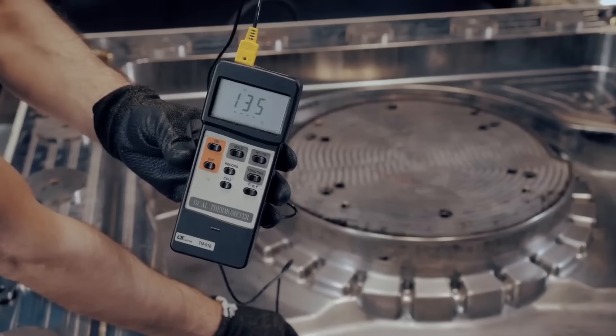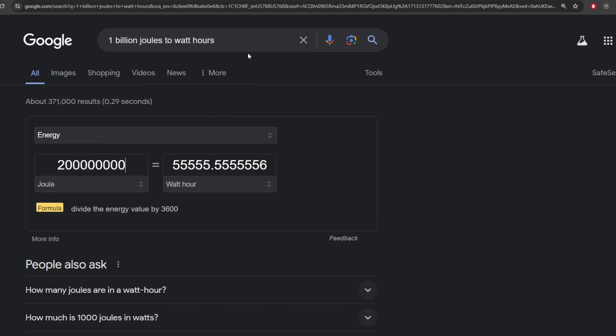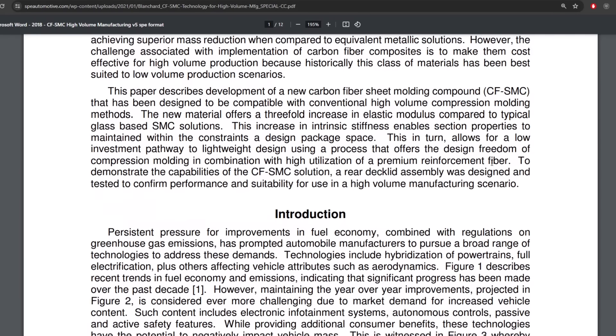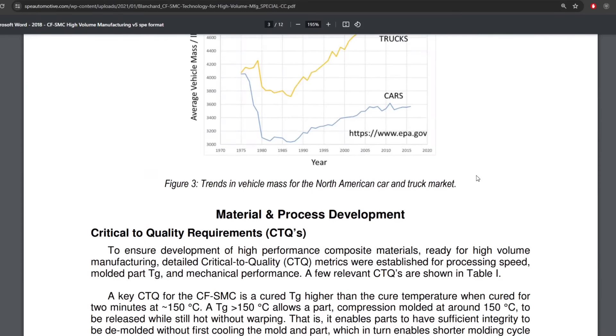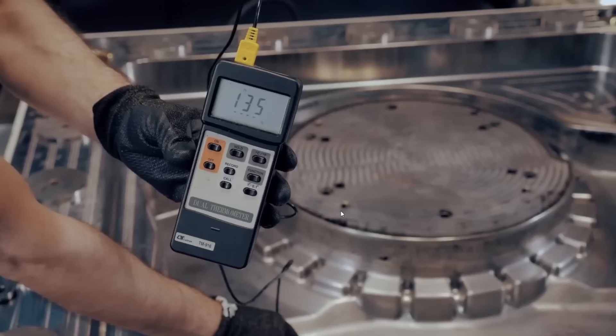So I thought, can this be right? And I found this paper and it says CFSMC technology for high volume manufacturing. And I looked at what temperature that you want. And yeah, sure enough, for compression molding CFSMC, you want a mold temperature between 145 and 155 Celsius. That is even higher than what is being shown in this video. So in this video it says 135.